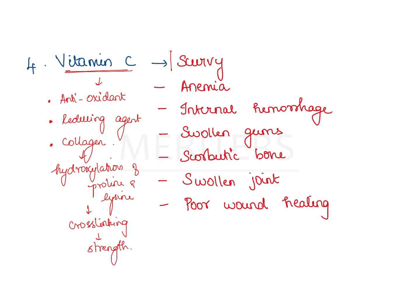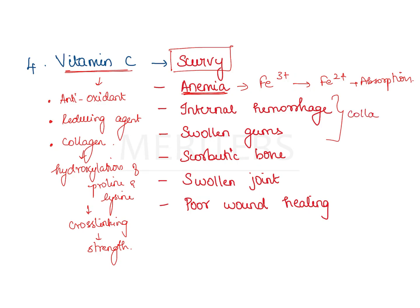In vitamin C deficiency, a condition known as scurvy results. The patient will also have anemia, because vitamin C is essential for converting the ferric form of iron into the ferrous form, which favors iron absorption. Other manifestations include internal hemorrhage, swollen gums — all attributed to the abnormal collagen formed — scorbutic bone due to impaired osteoid formation, swollen joints with hemorrhage into joint cavities, chances of multiple fractures, and poor wound healing. All these are manifestations of scurvy.